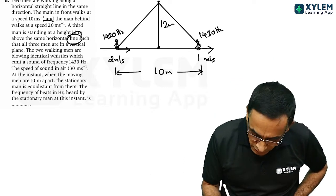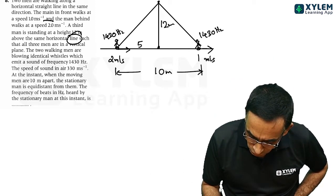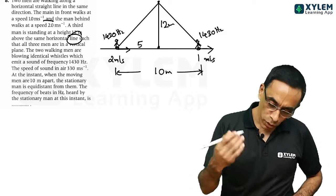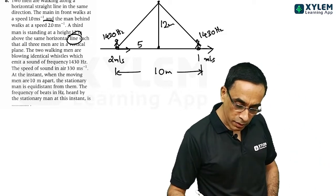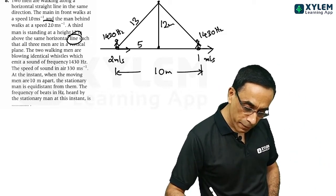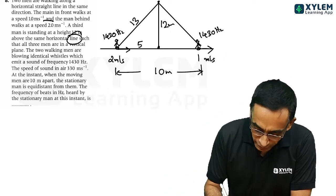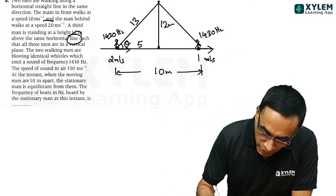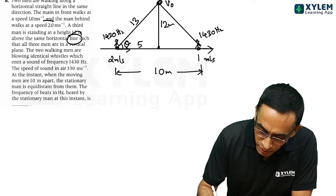The distance from one man to the middle point will be equal to 5 meter. This will be like a root of 5 square plus 12 square. That will become 13 meter. The distance is 13 meter. Take this angle as theta.